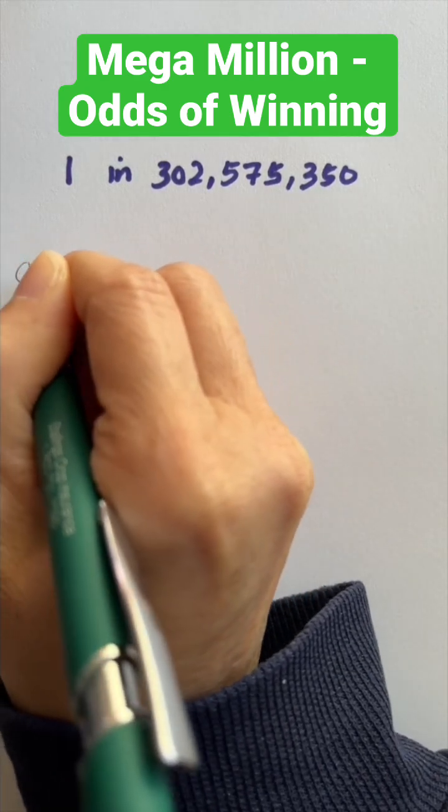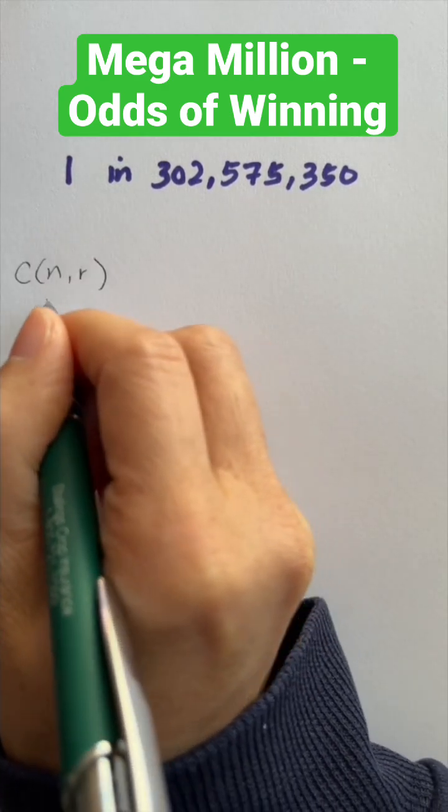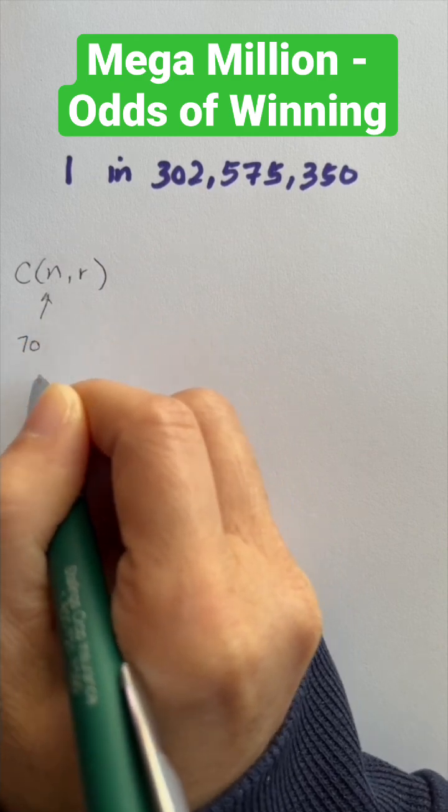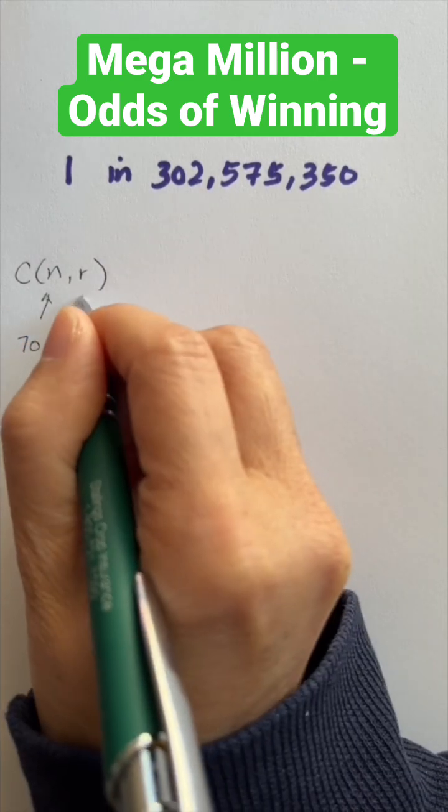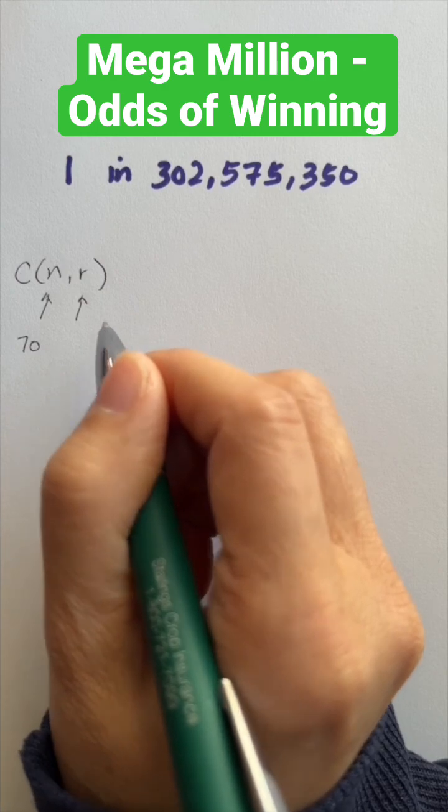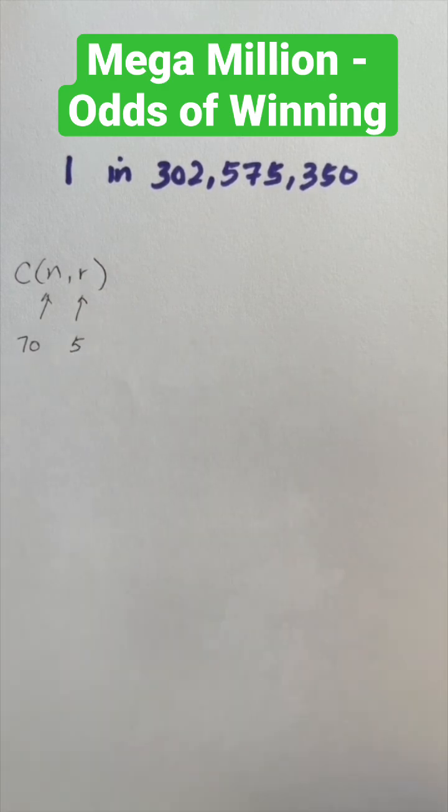We need to use the combination formula where n is equal to the number of elements that we have, which are 70. There are 70 white balls, and r is the number of elements that we are selecting, 5. We need to get 5 of these numbers correct.